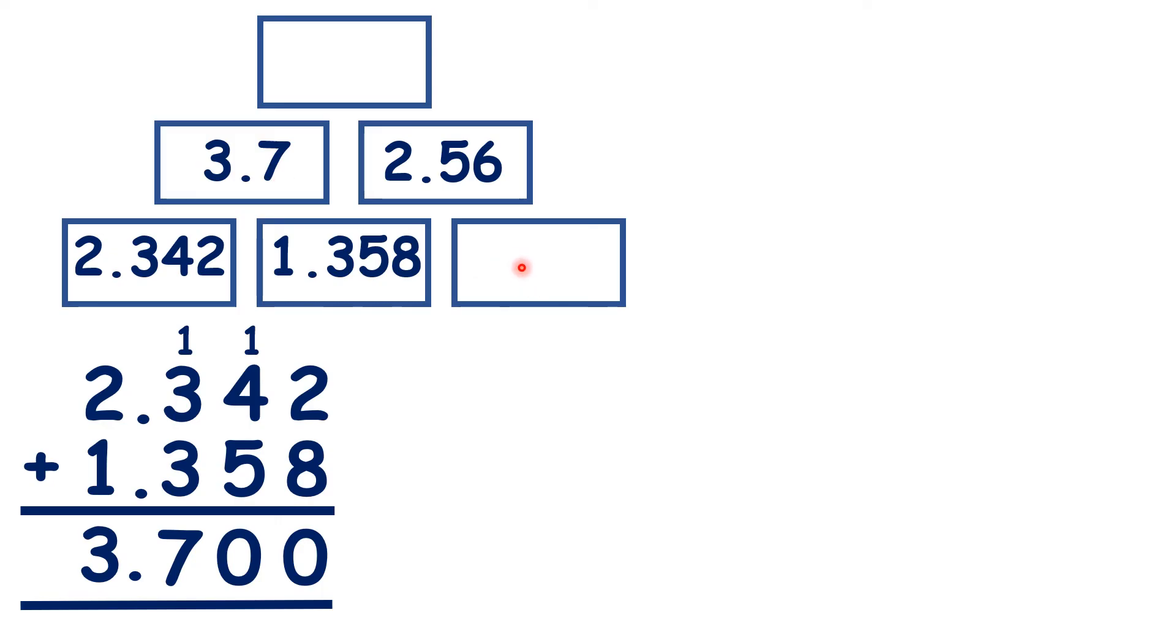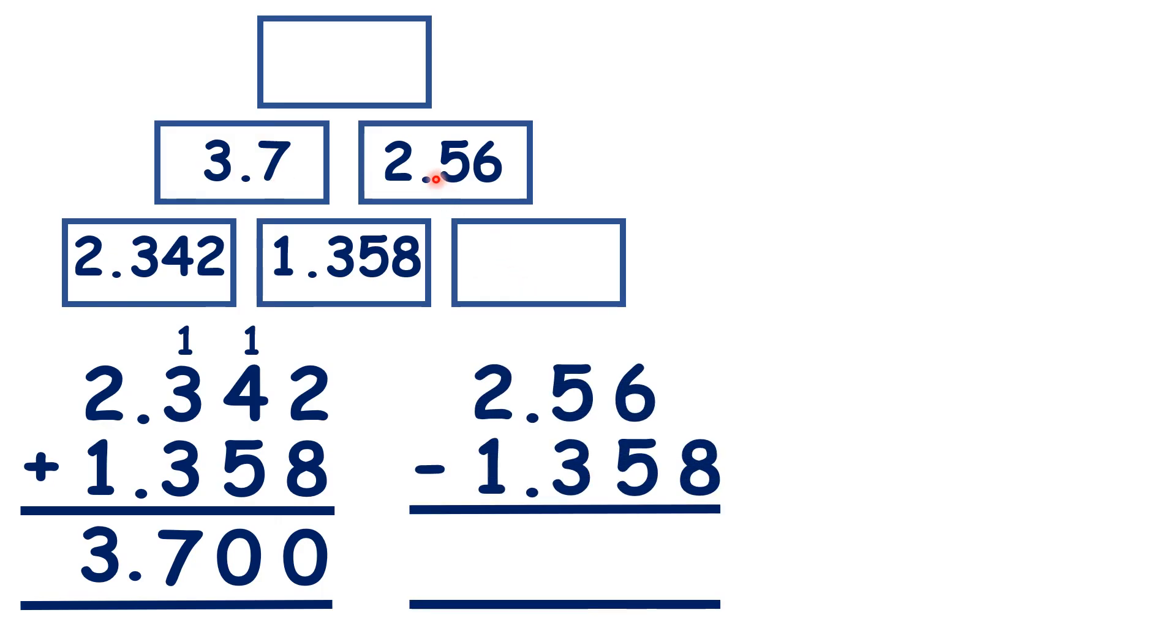And now for this brick here, we need 2.56 minus 1.358. So we need a 0 in our empty place value column. There's our decimal point. And then we subtract as normal to get 1.202. And we do need the zeros - it's only zeros at the end of a decimal number that we can ignore.